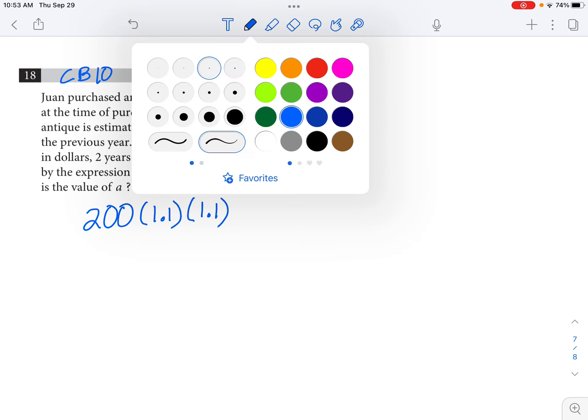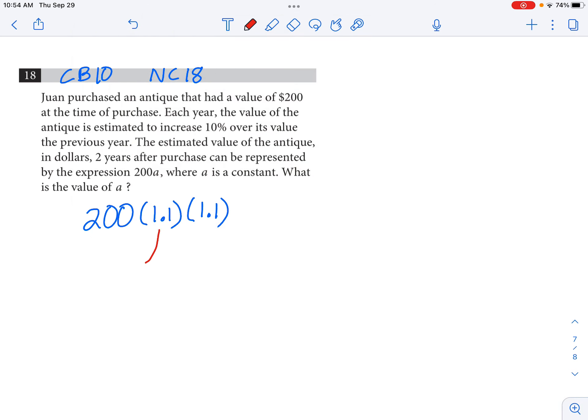Now if you're wondering what the 1.1 stands for, the idea here is that after a year, Juan's item is 100% of its previous value plus 10% more. Now 100% written as a decimal is 1, 10% written as a decimal is 0.1, and that's how we get that 1.1.